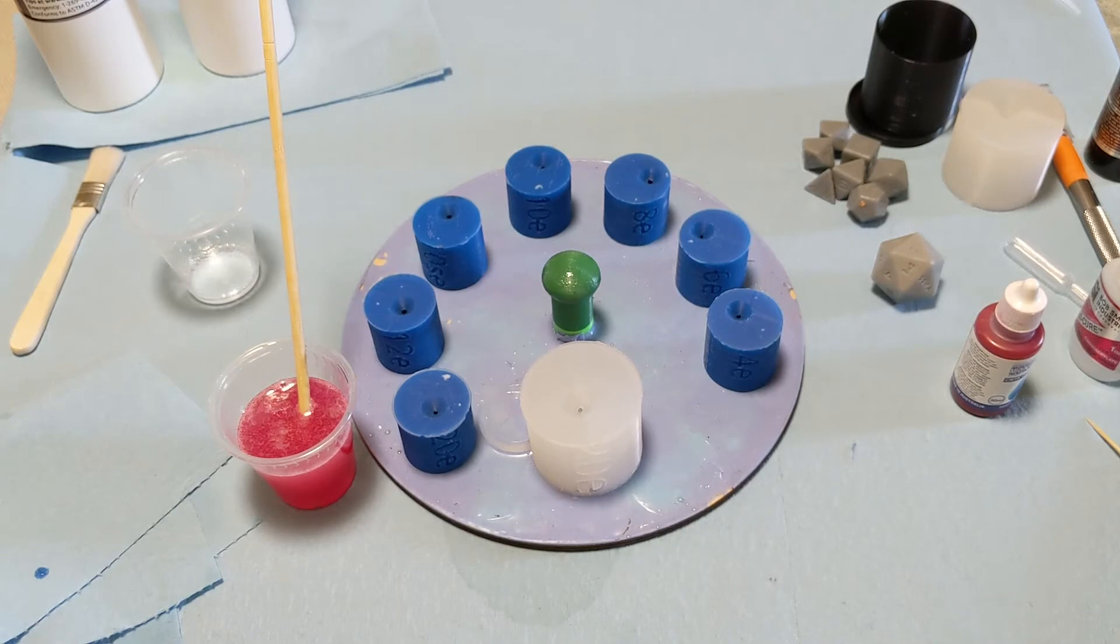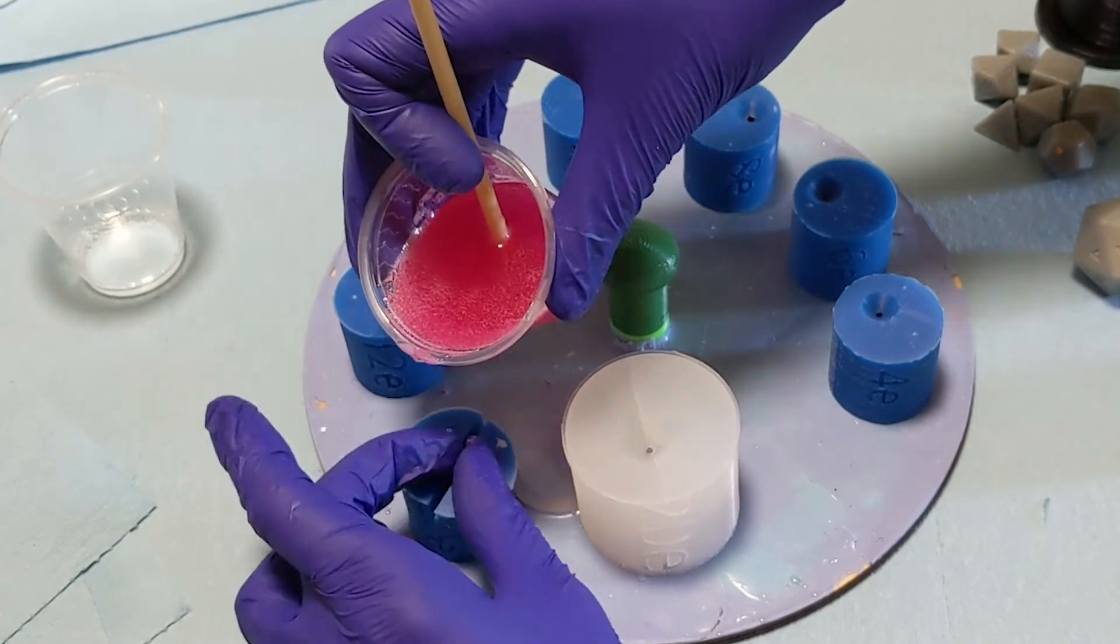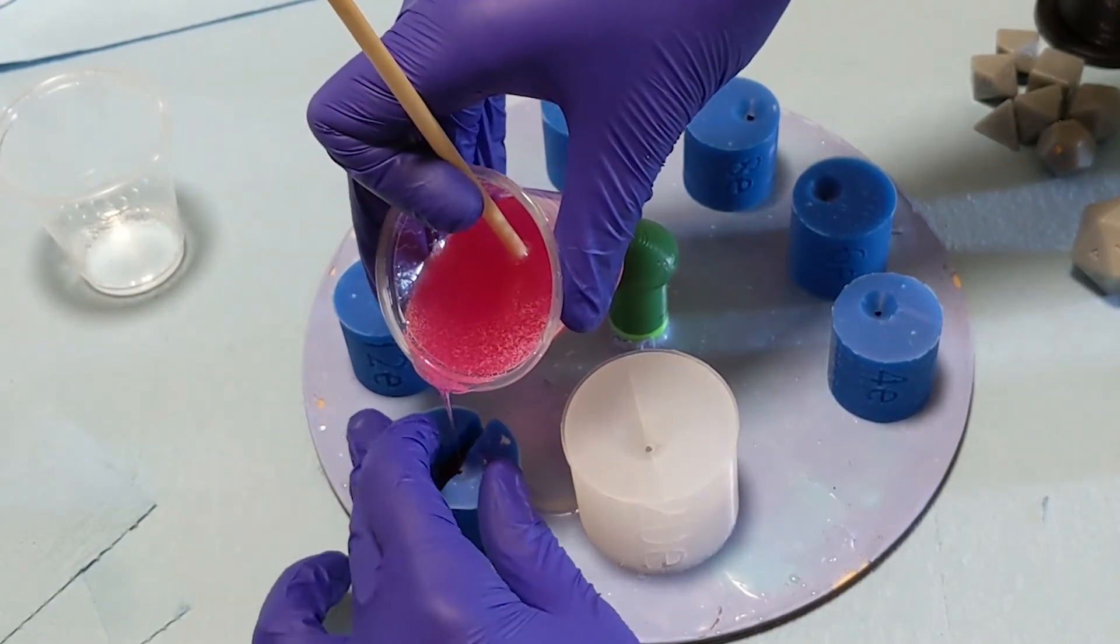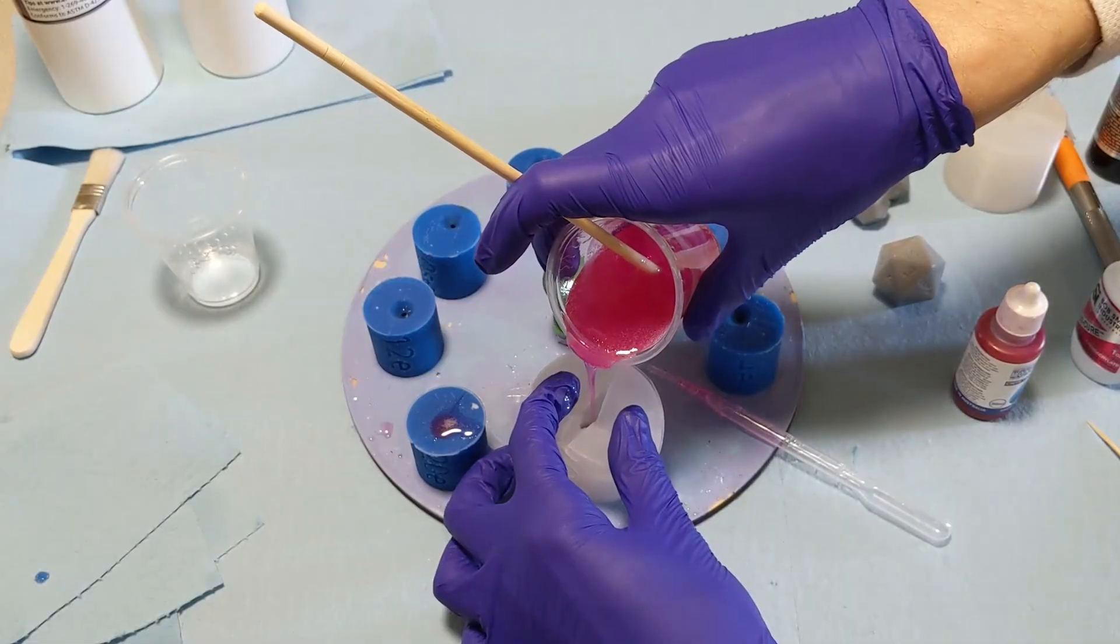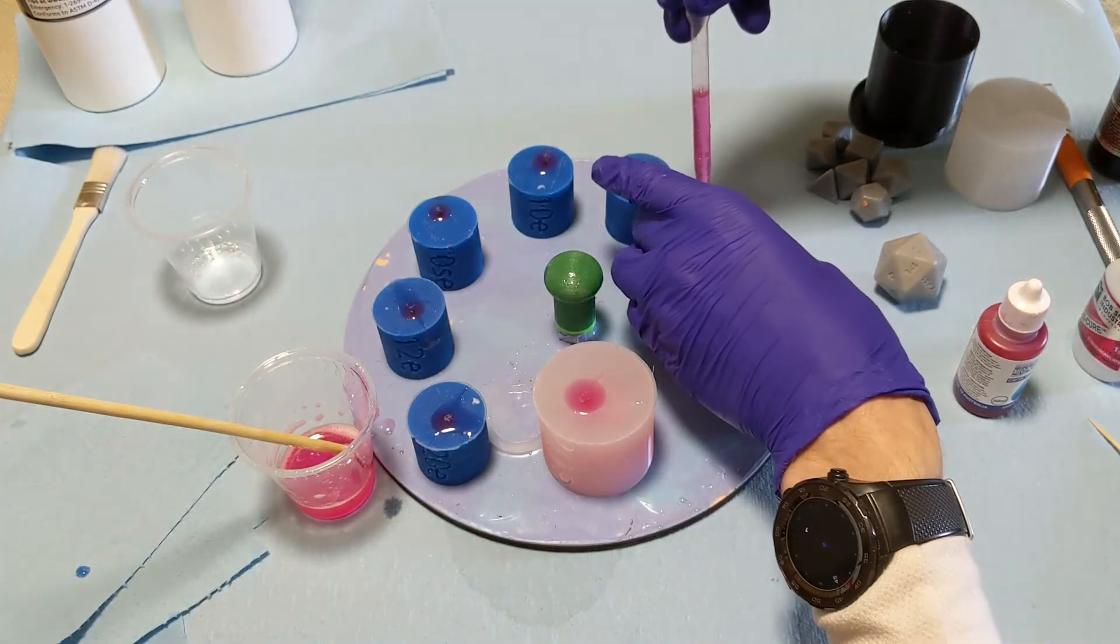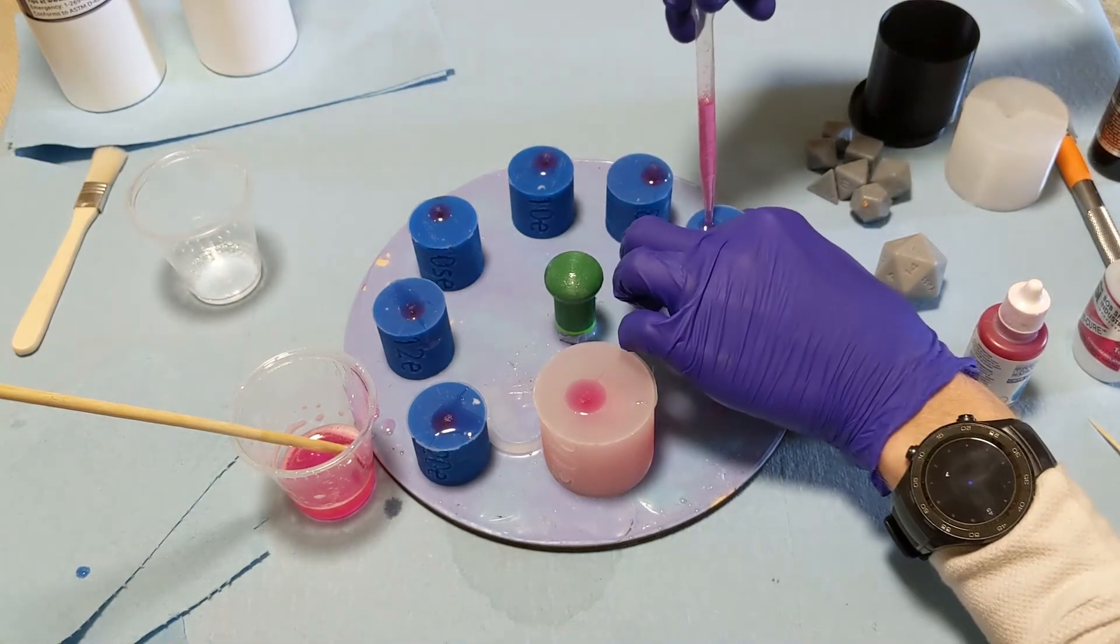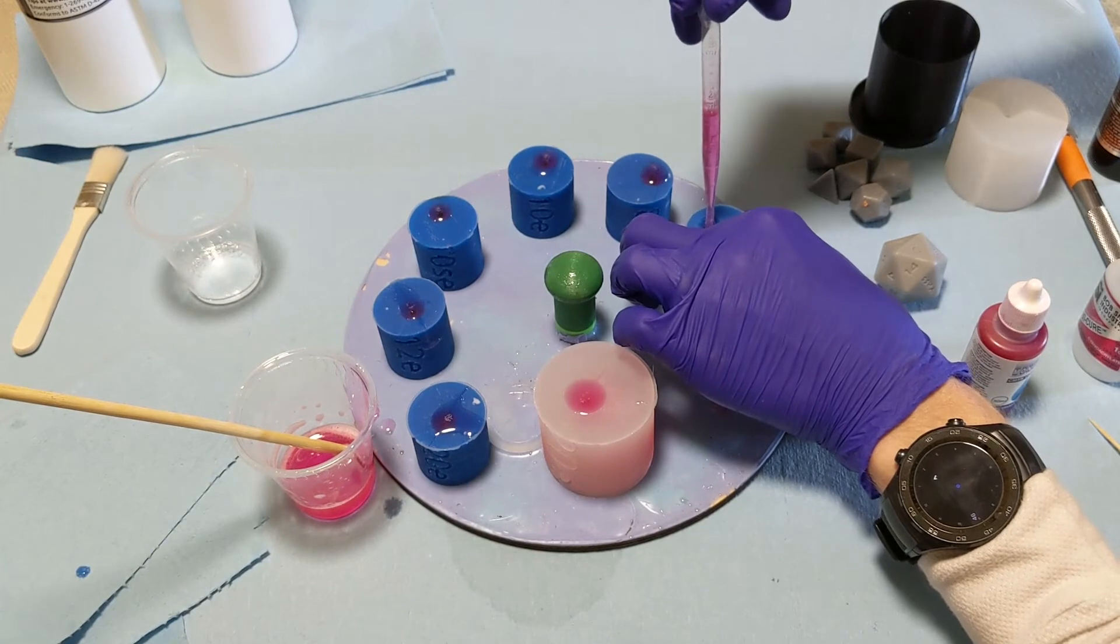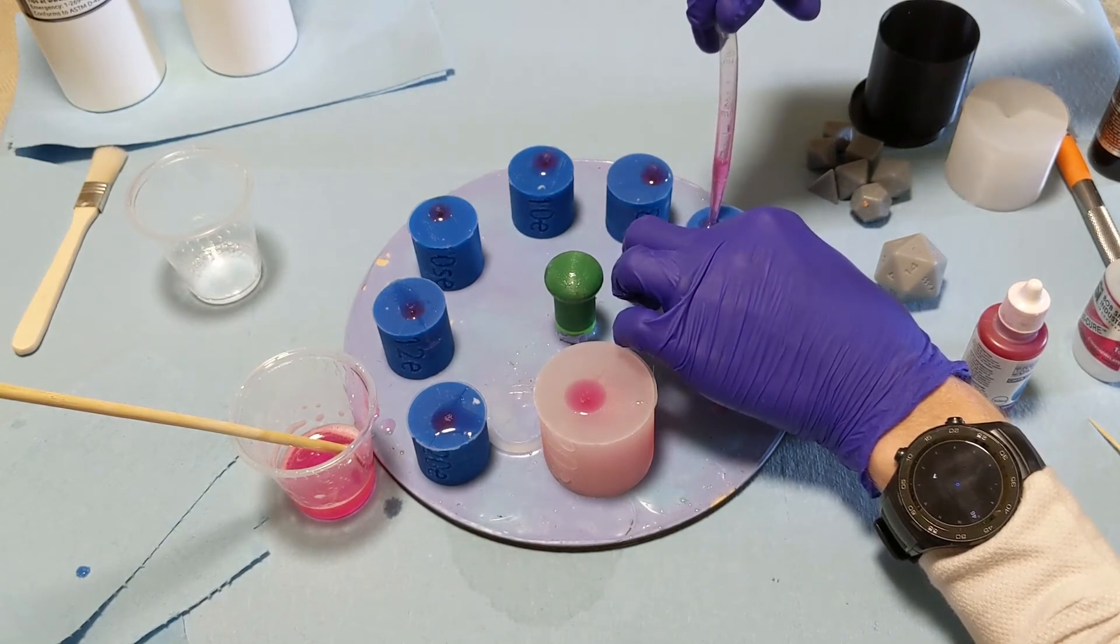After letting the bubbles surface and pop for a while, I'll go ahead and fill. Yes, there's still a lot of bubbles in it, but I'm just going to put it in a pressure pot. So I'm going to pour them all in, let them sit for a little bit, and then top them off with a pipette and make sure that all the air bubbles I can get out are out, and then leave some excess in the reservoir for it to have somewhere to fill in when it's in the pressure pot.